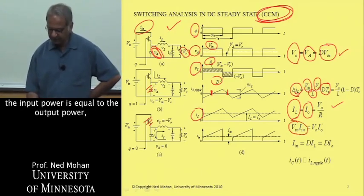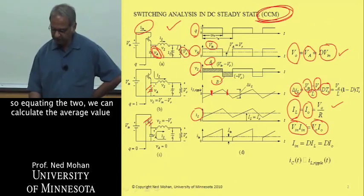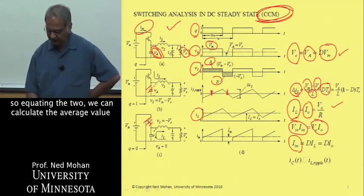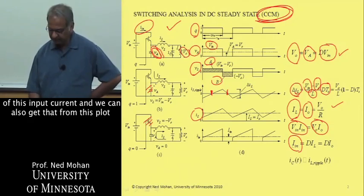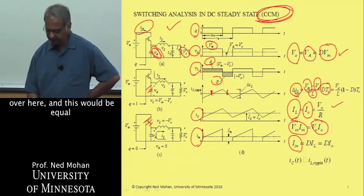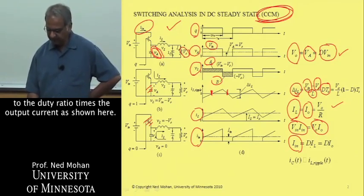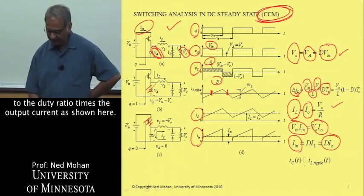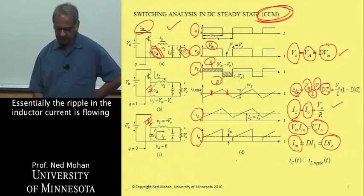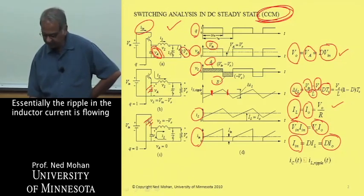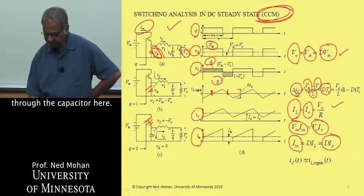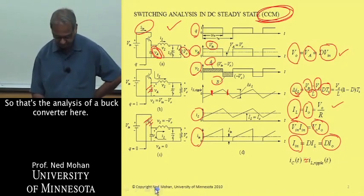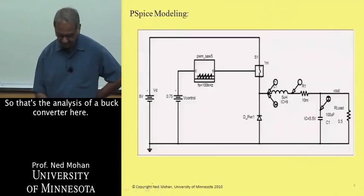The input power is equal to the output power. So equating the two, we can calculate the average value of this input current, and this will be equal to the duty ratio times the output current, as shown here. And essentially, the ripple in the inductor current is flowing through the capacitor here. So that's the analysis of a buck converter.